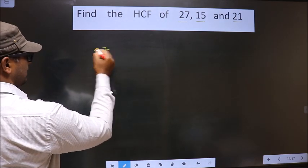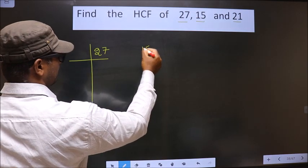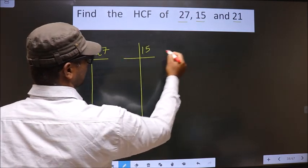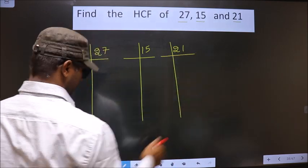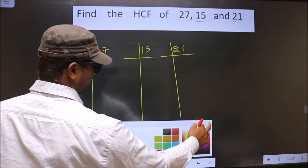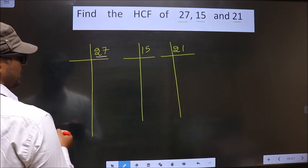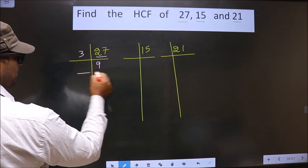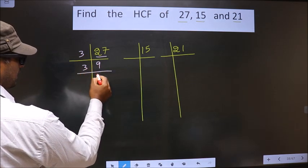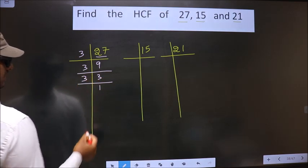That is 27, 15, 21. Now, for this number here we have 27. 27 is nothing but 3 times 9. Now 9 is 3 times 3. Now 3 is the prime number so we take 3 and 1.